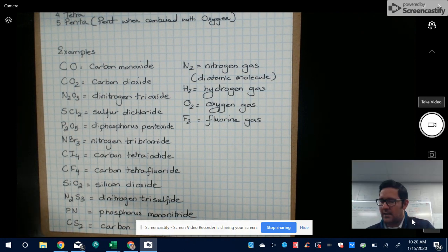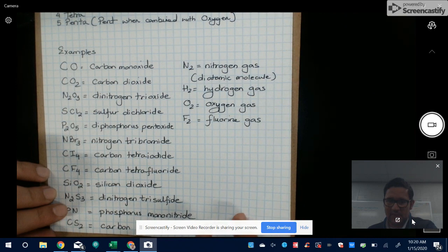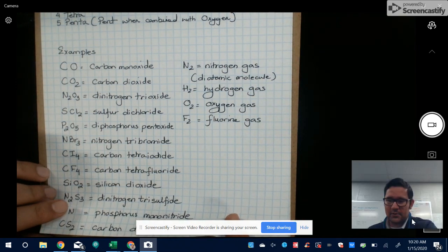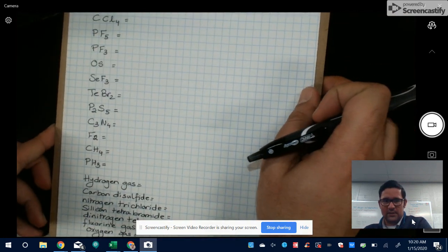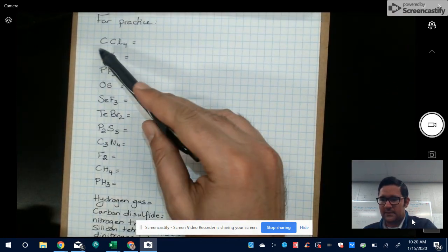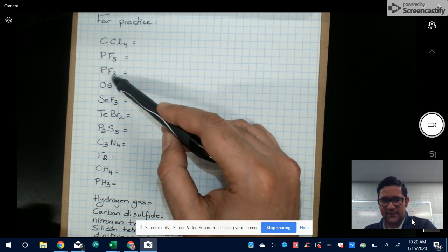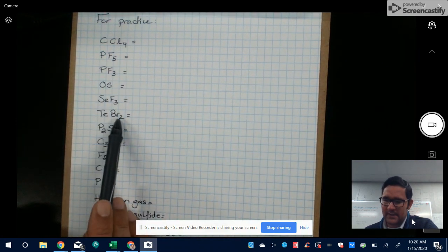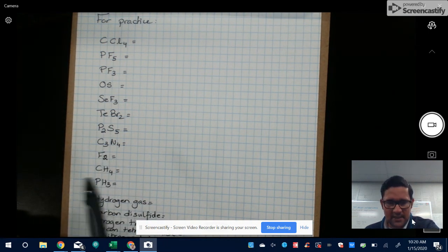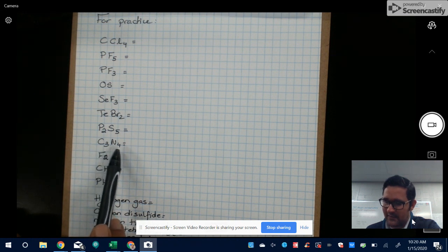So what I want you to do is on the next page I'm going to give you some examples. And for this particular assignment, for this video assignment, I want you to go ahead and put your answers and submit them in the Dropbox. So for practice, here are all the ones that I want you to do. Carbon, C and Cl4, P and F5, P and F3, OS, SE, F3, TE, BR2. I'm just reading this out in case my handwriting is not very clear. P2, S5, C3, N4, F2, CH4, PH3.